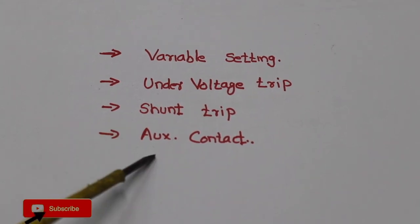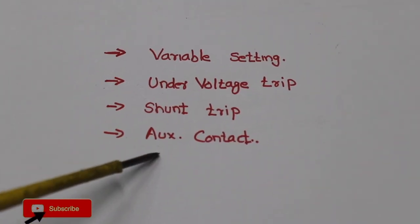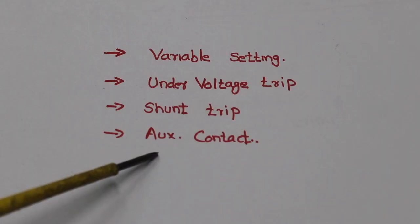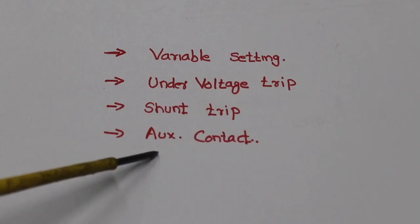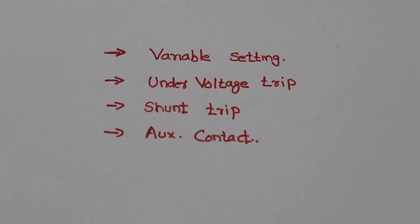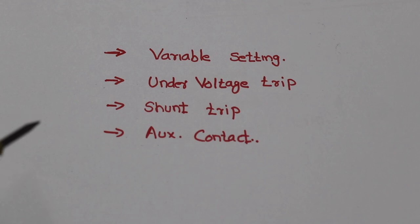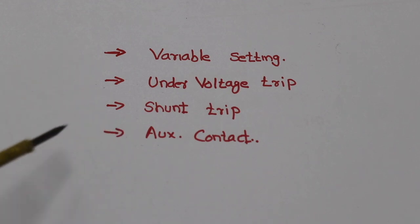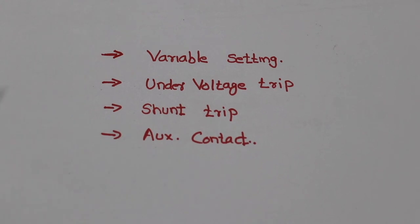This is the auxiliary contact. This is the main contact. It has an extra contact — a normally open contact. This is an auxiliary contact. When a fault occurs, this auxiliary contact opens. I am going to show you how to get the status of the MCCB.